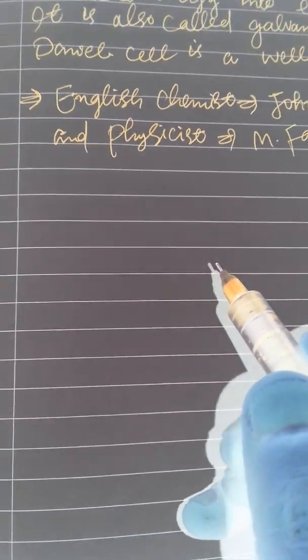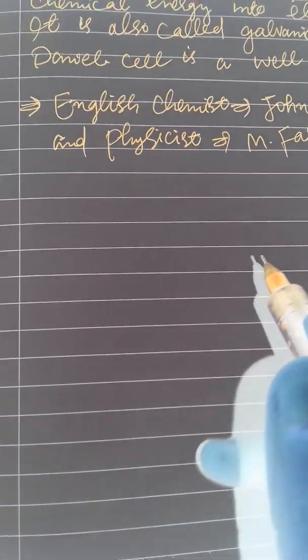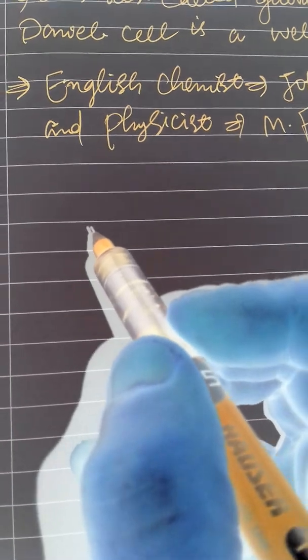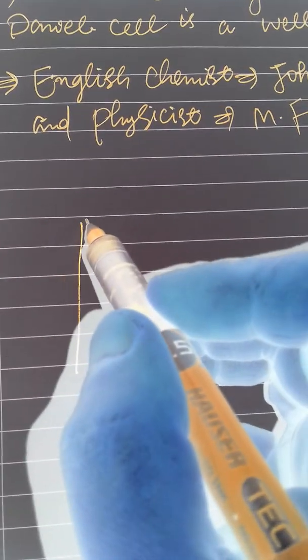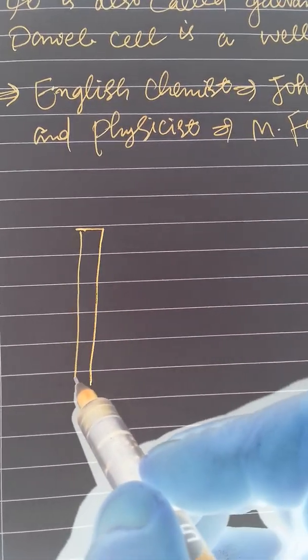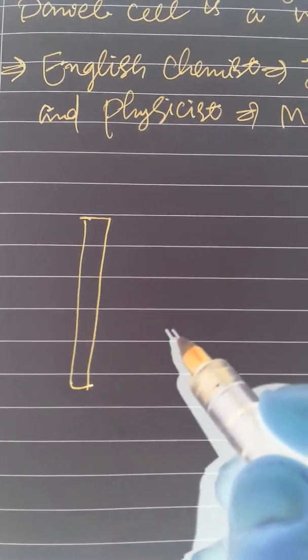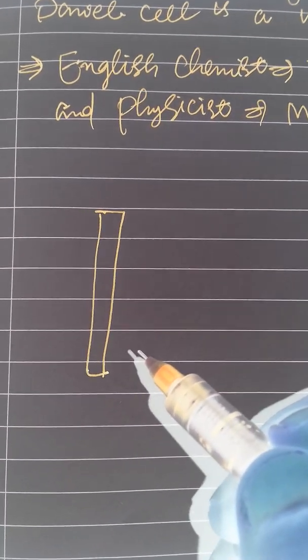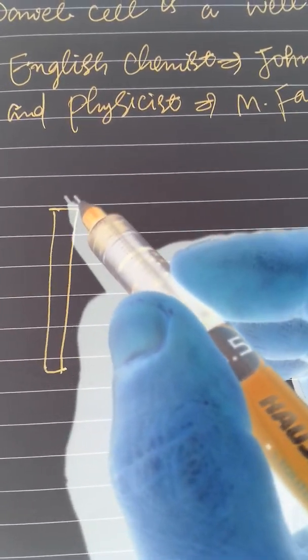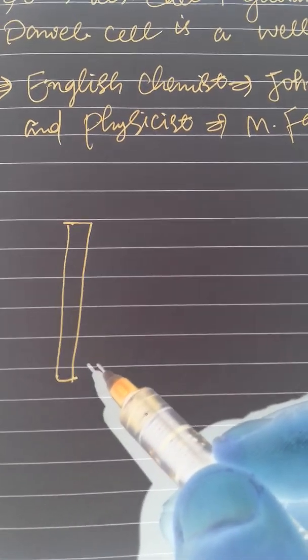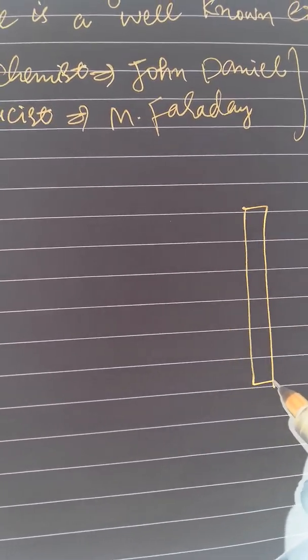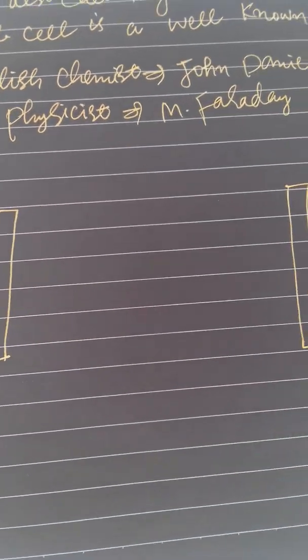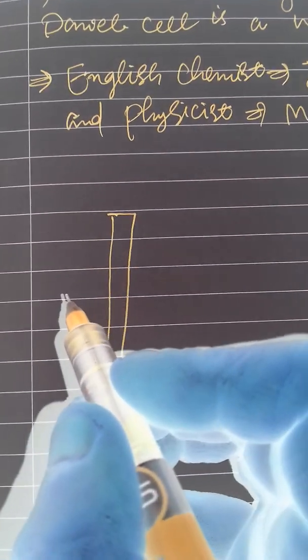To discuss the electrochemical cell, let's take two electrodes. An electrode is a metal plate or metal surface where either oxidation or reduction takes place. One metal surface or metal rod is placed on the left side — these are the two electrodes.